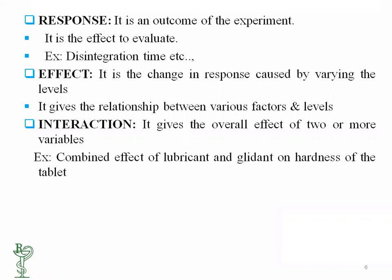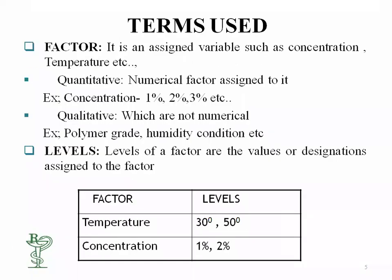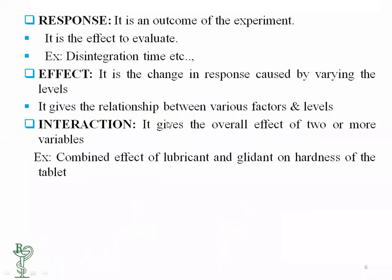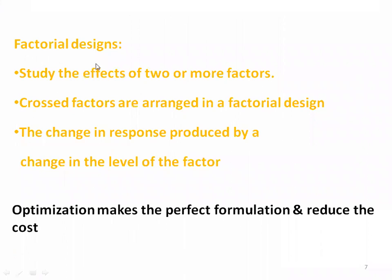'Interaction' occurs when we have two factors and varying both affects the result of one another. There may or may not be interactions, and we have to check for them. Interaction gives the overall effect of two or more variables — there may be a synergistic effect or an antagonistic effect. For example, the combination effect of lubricant and glidant on tablet hardness may show interaction — whether it improves or decreases hardness depending on concentration.